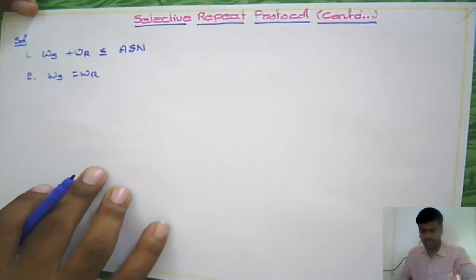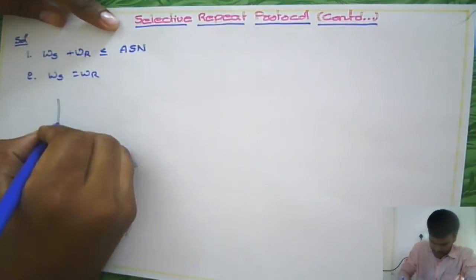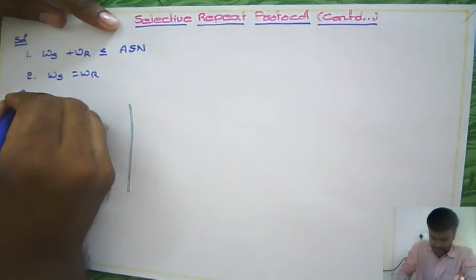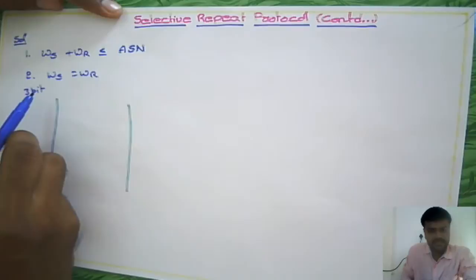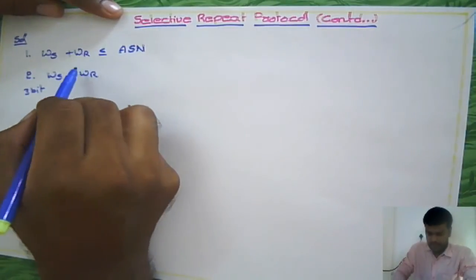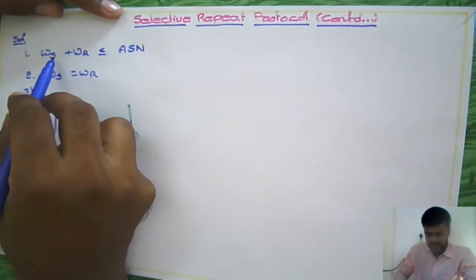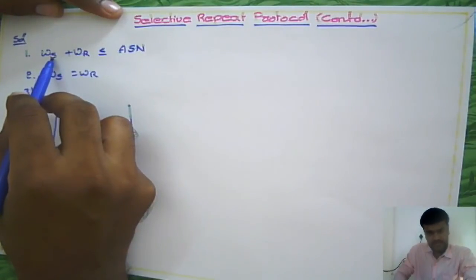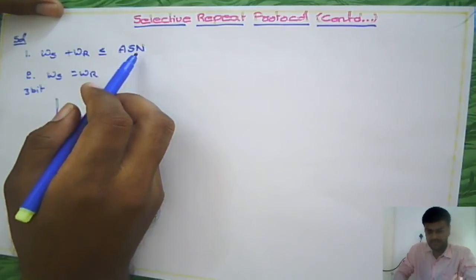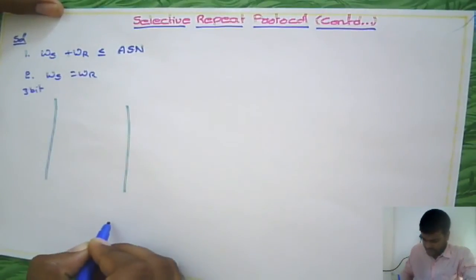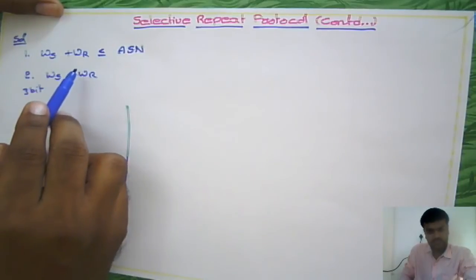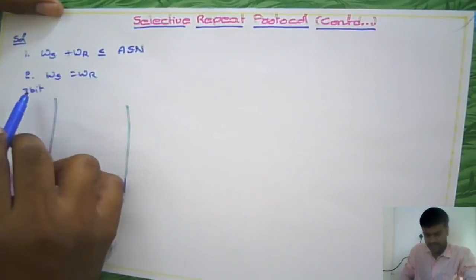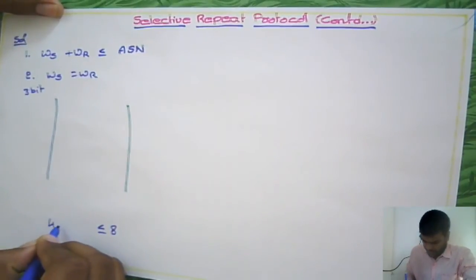Let us see how it is going to be solved using the same example as before. Here the window size uses 3-bit sequence numbers, so 8 sequence numbers are possible. Looking at the formula, both window sizes should be equal, and their sum should be less than or equal to the total available sequence numbers, which is 8.